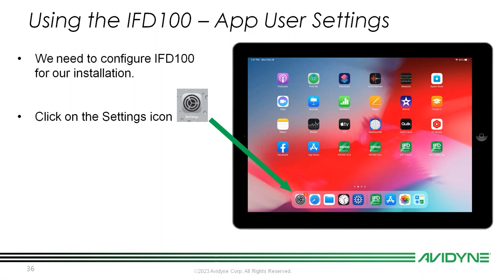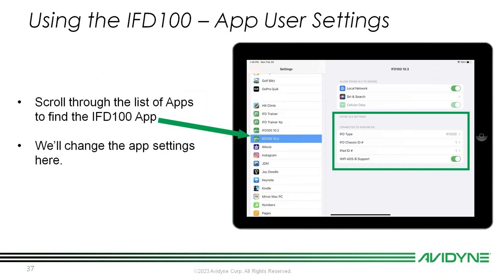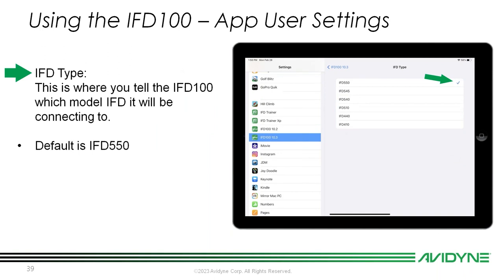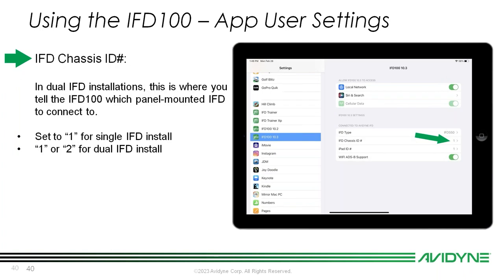Now that we've got databases out of the way, let's get into customizing our IFD100 to match the IFD in your actual panel. We'll click on the settings icon in our iPad and scroll down to our IFD100 10.3 app. There are four settings I want to cover. The first is your IFD type — this is where you tell the IFD100 app what model IFD it's going to be connecting to. It defaults to IFD550, so if you have a 540 or 440, make sure you go in and change it to match the IFD you want it to talk to.